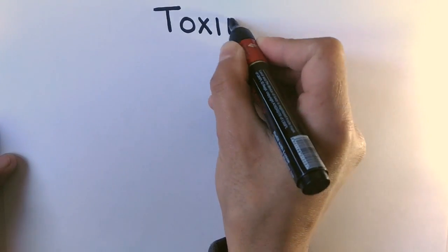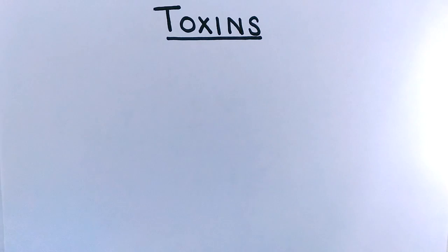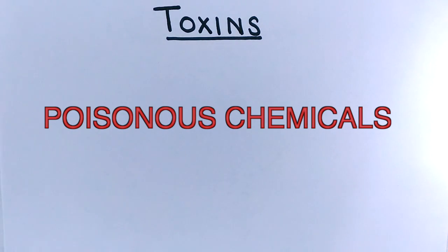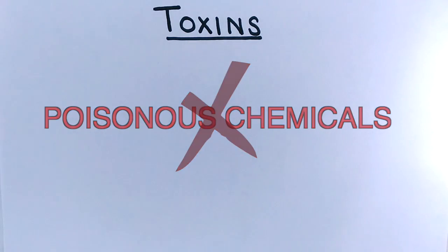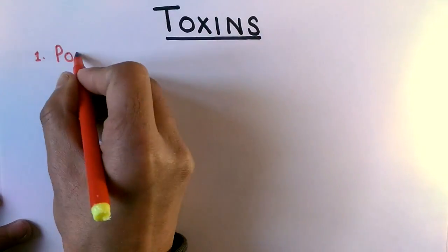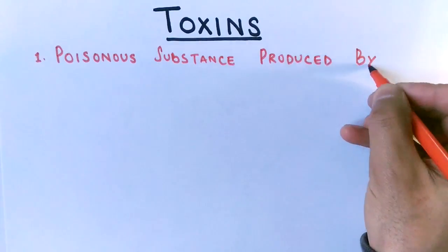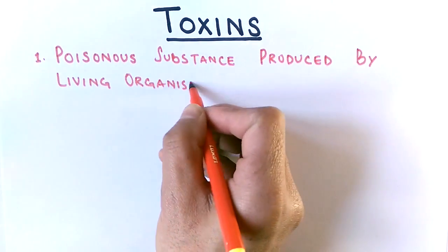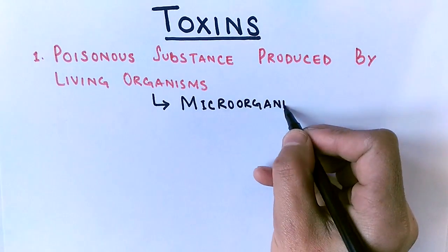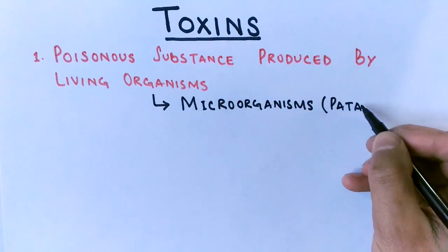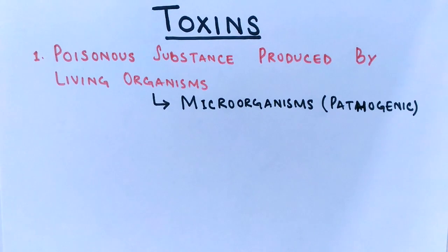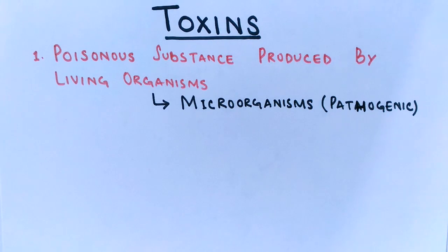You might have heard the term 'toxin,' and most of us relate this term to poisonous chemicals. Today in this video we will discuss and clear the concepts regarding toxins. Toxins are substances produced by living organisms — note that — and most toxins are produced by pathogenic microorganisms, most probably bacteria. These are poisonous substances which can disrupt the normal functioning of the host organism, making you ill or even killing you.